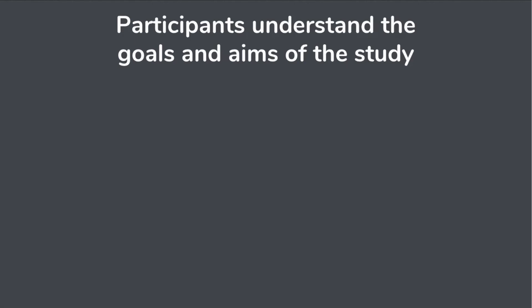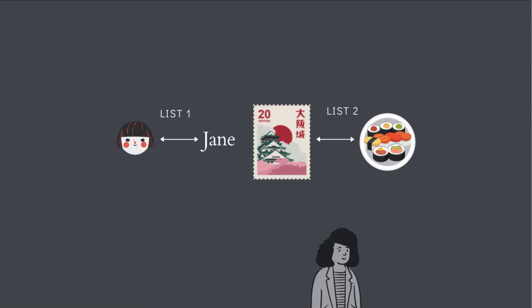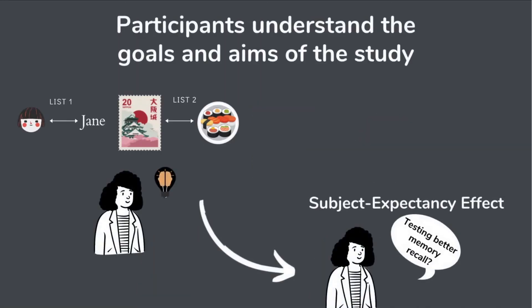Finally, another issue is that participants might gauge the aims and goals of the study, since they take part in all conditions and experimental groups. This could lead to the subject-expectancy effect, wherein, upon guessing the aims of the study, participants try to perform ideally. This interferes with their true performance and does not give us any information about their actual cognitive abilities of interest.